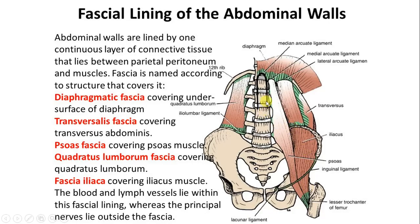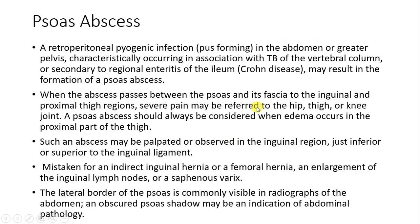Because the pus is lying behind the iliopsoas fascia and travels in this way, it is also involving the lumbosacral plexus — the nerves which are originating for the lower limb, particularly the lumbar plexus. When this is involved, the pain will be referred to the hip joint, to the thigh, and to the knee joint. The abscess can come into the inguinal region, inferior or superior to the inguinal ligament.